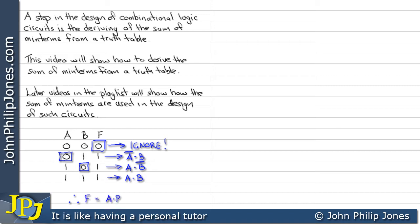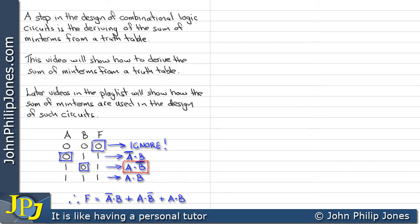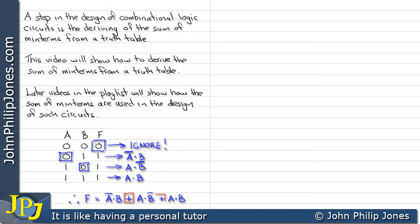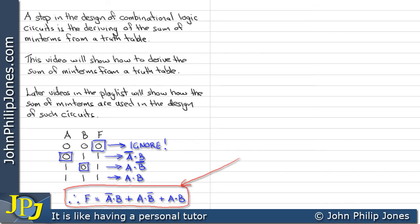Therefore, f is made up of the minterms that we can see here. I'm just rewriting the minterms we found for every row where f was 1. For example, here is one of the minterms, which corresponds to the first f=1 row — I've essentially copied that down. This is the next minterm, copied to this position. And finally we have the last minterm copied here. All of the minterms are OR'd together, and all of this is referred to as the sum of minterms.